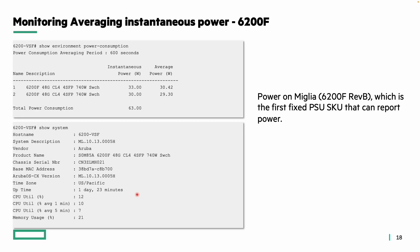An interesting highlight is the 6200F, which is the first fixed PSU SKU that can report power. Using the same CLI command, this demonstrates that the 10-13 version on the 6200F supports the averaging power consumption feature.